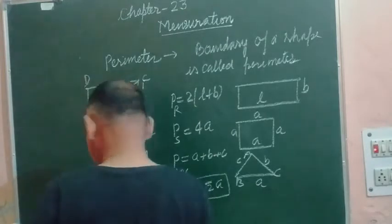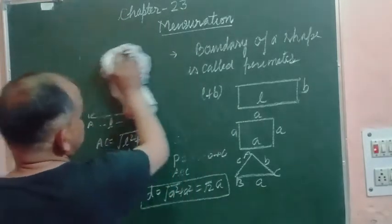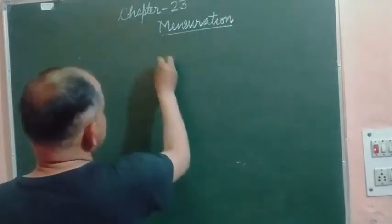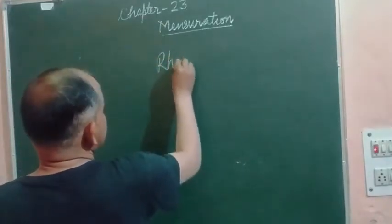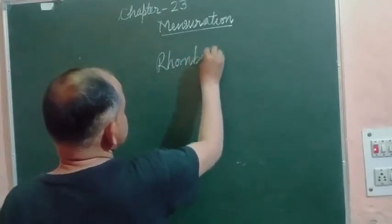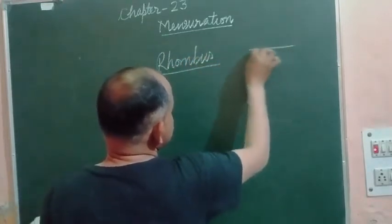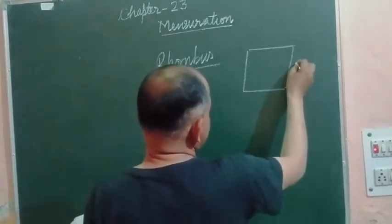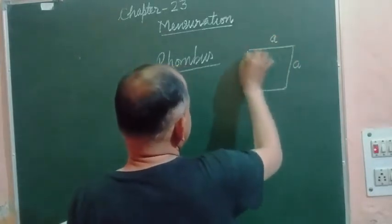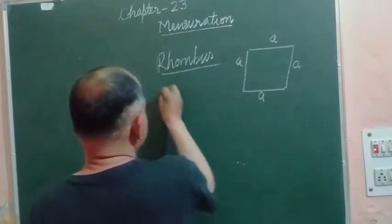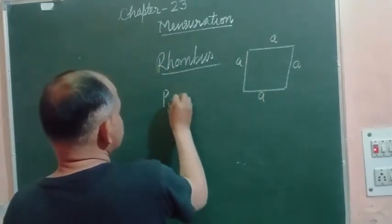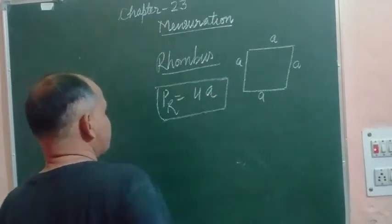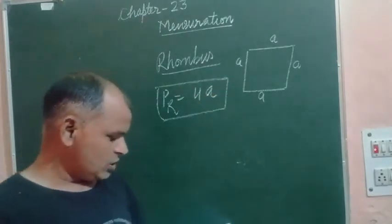Now, a rhombus is a shape whose all sides are equal but each angle is not 90 degrees. So all four sides are A. The perimeter of a rhombus equals 4 times A.